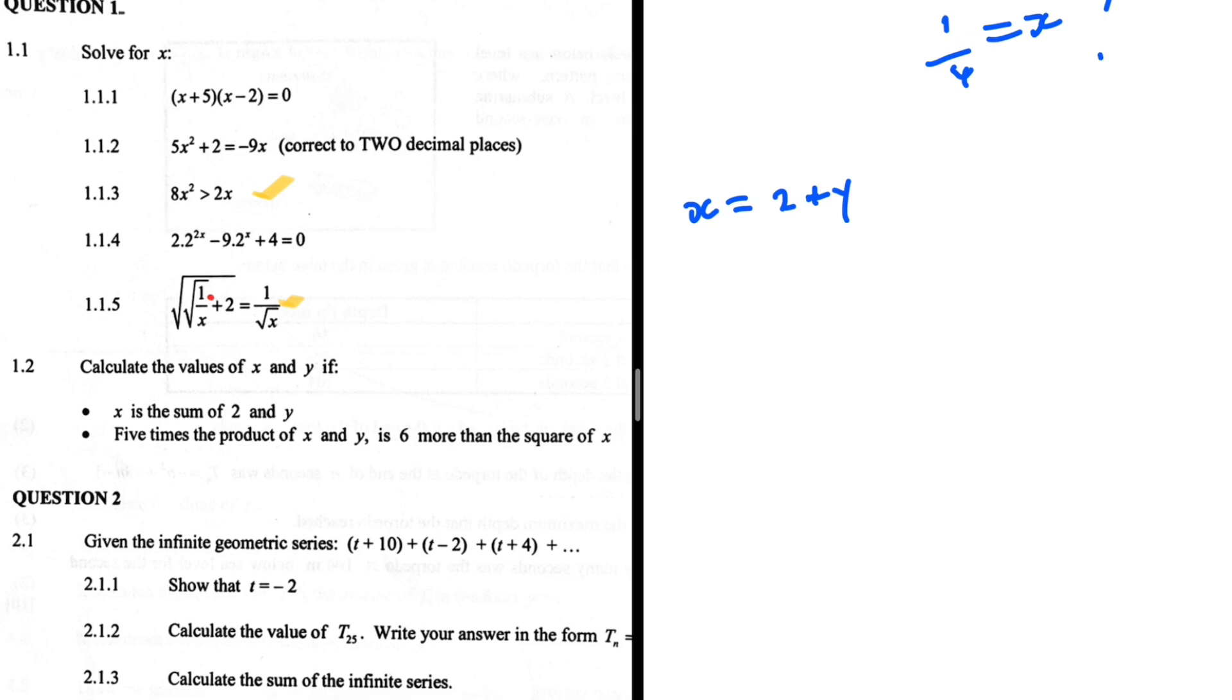Five times the product of x and y is 6 more than the square of x. You might be tempted to use a greater than sign instead of an equal sign, but we're actually supposed to use an equal sign. So 5xy equals x squared plus 6.